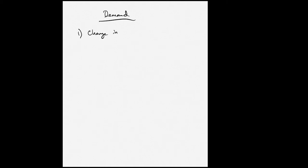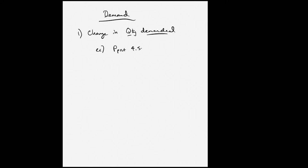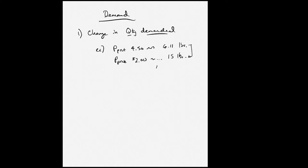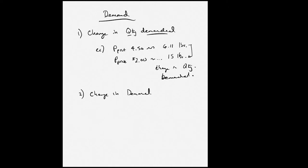Let's talk a little bit more about demand, and there are two ways we can look at demand. The first way is the change in the quantity demanded — that's an important distinction. There is a quantity demanded for all products, and that quantity demanded is in relationship to the price. For example, with pork at $4.50, we wanted 6.11 pounds. At $2, we would buy 15 pounds because it got cheaper. This is an example of the change in the quantity demanded — it's based on changes in price, which is the relationship between price and quantity.